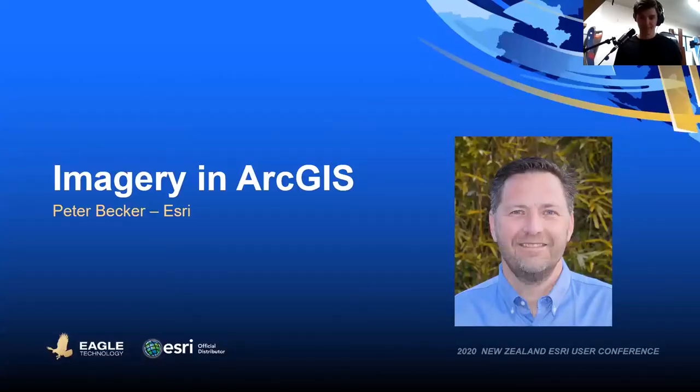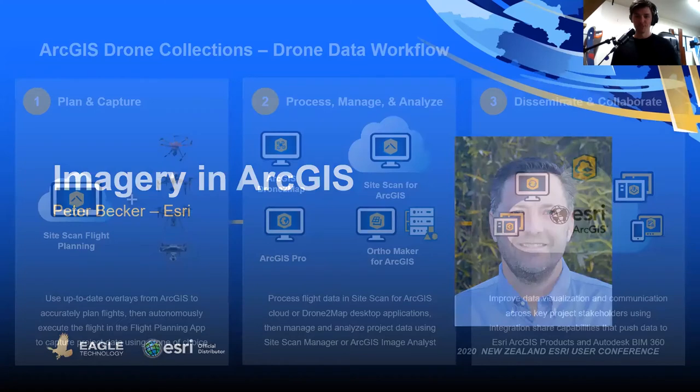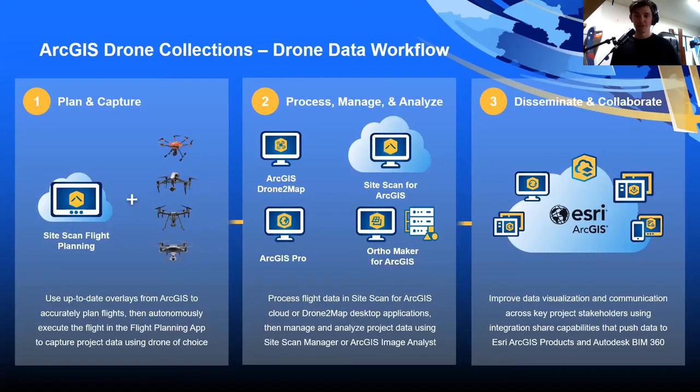Thanks for that, Peter. As you can see, there are some exciting imagery capabilities within the ArcGIS platform. Peter just touched on the five core capabilities of imagery. For the rest of the presentation, we will take a deeper dive into each of those capabilities. But first up — map production, and more specifically, how drones are used in that production.